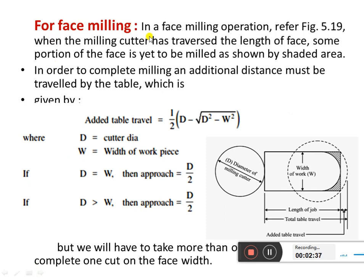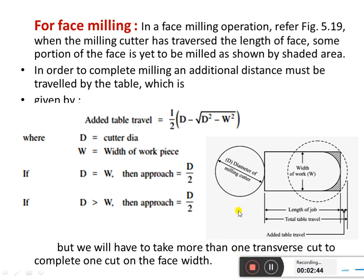For face milling, as seen in the diagram, when the milling cutter traverses the length of the face, some portion of the face is yet to be milled, as shown in the shaded area. Once the cutter starts from one end of the job, it moves to a certain point, but the remaining portion requires the cutter to move over the work piece — this is the added table travel or over travel needed to complete the milling.